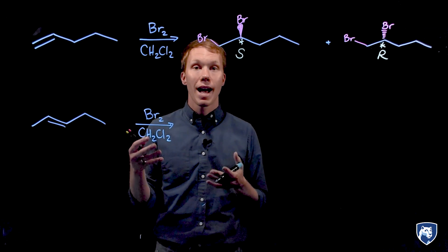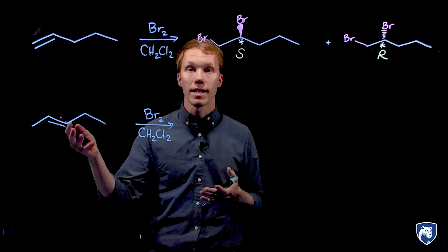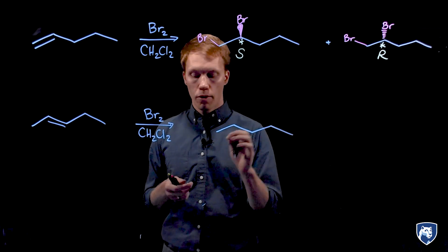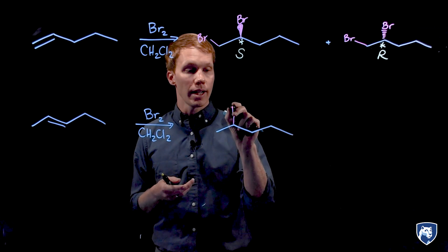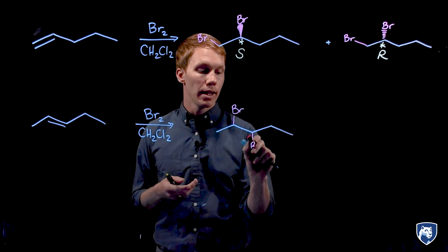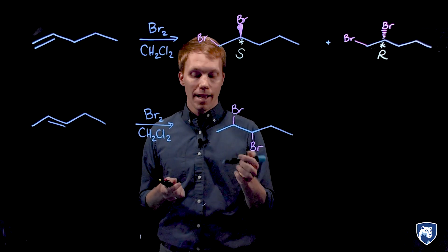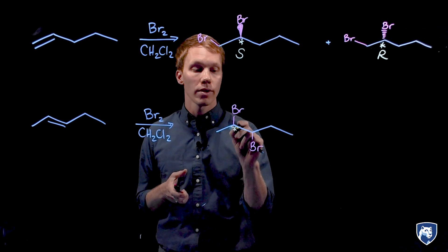Let's carry out the halogenation reaction on two pentene and see how that compares to that of one pentene. We're going to add bromine to each carbon of the alkene in the same way that we did above. The difference now is that we've generated two chiral centers.